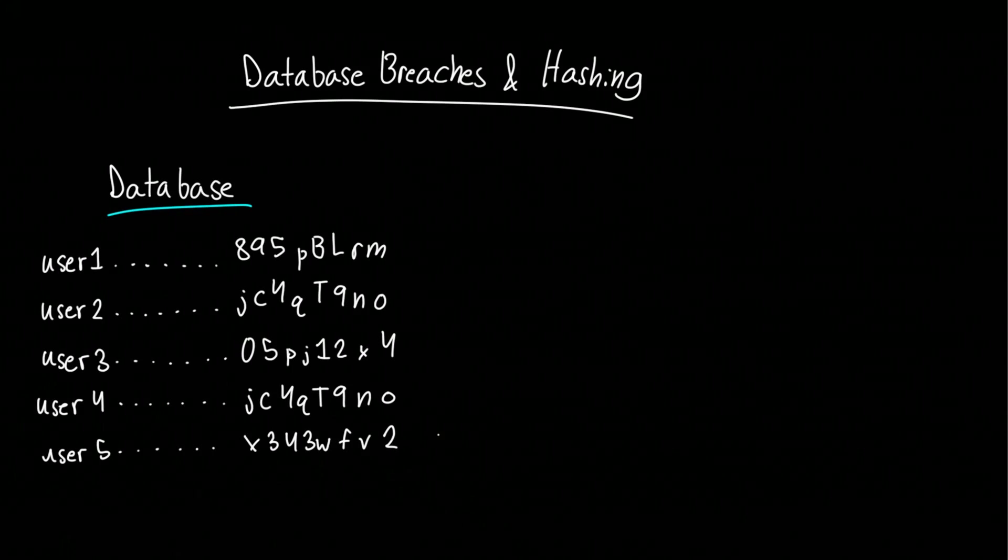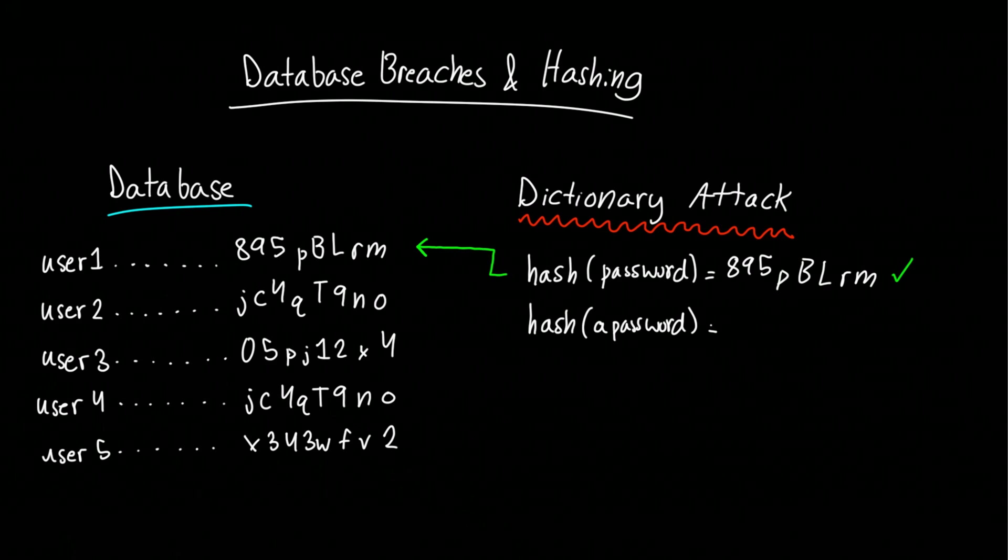An attacker can use known hashing algorithms and pre-compute the hash outputs for a dictionary of billions of common passwords. Then, should a database be compromised, the attacker only needs to compare the stored hashes to their pre-computed outputs to break all the accounts with weaker common passwords.